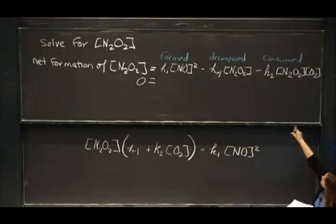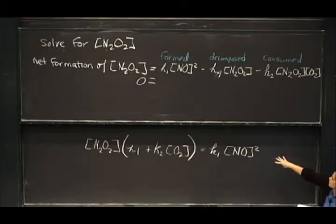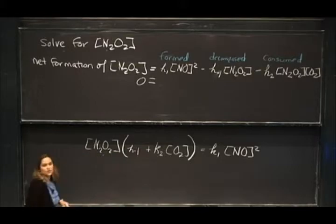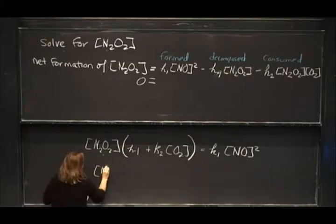which is another way of expressing the steady state approximation. So we've just moved the decomposed and consumed to one side, and we have the rate at which it's formed on the other side. And now we can easily solve for the concentration of the N2O2. So we're going to do that over here.